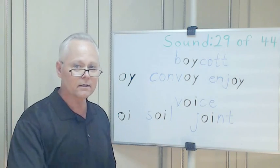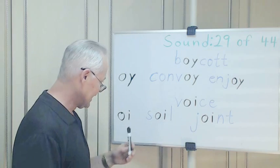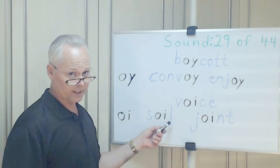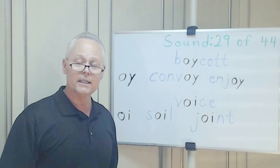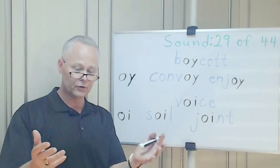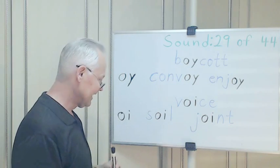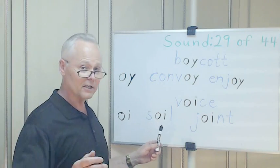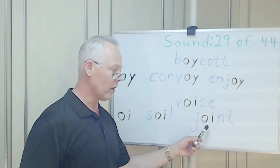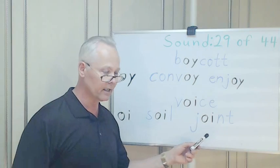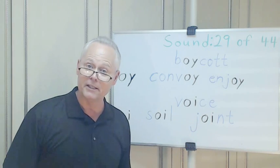Oil. Soil. What is soil? Well, basically dirt — farmers plant their seeds in the soil and the crops grow. Soil. If your clothes get dirty, someone might say 'Oh, you've soiled your clothes and you need to wash them.'